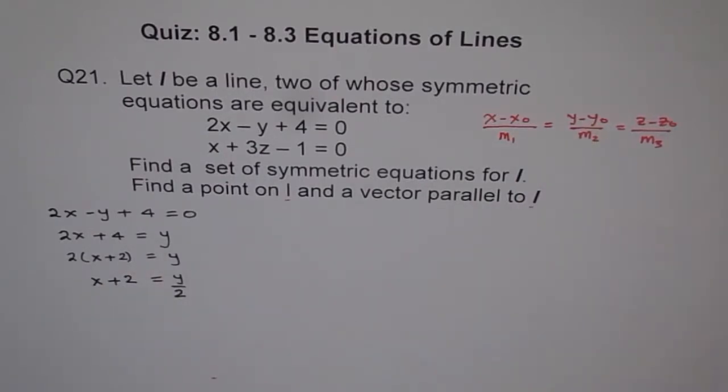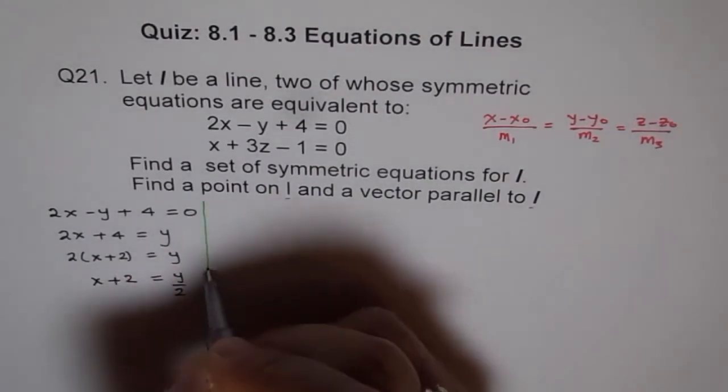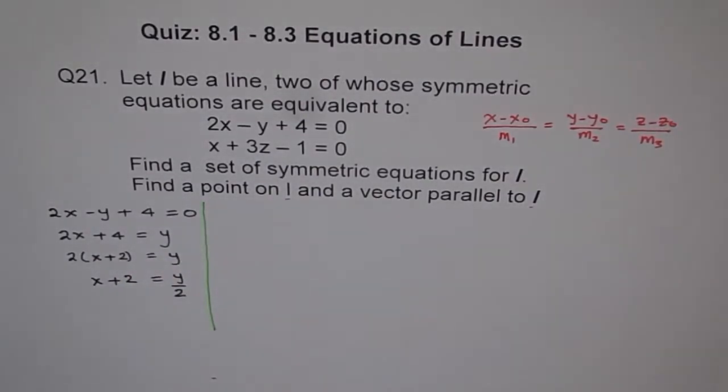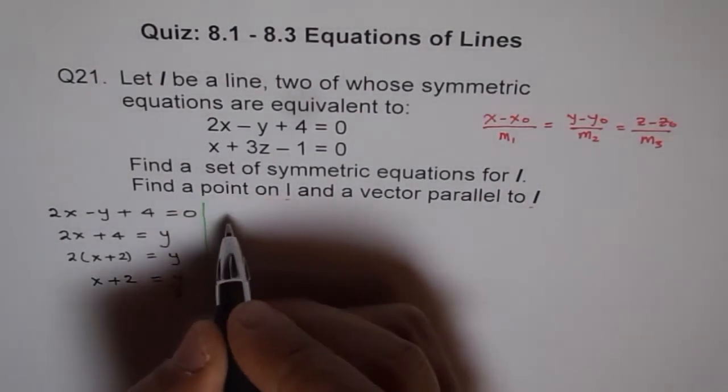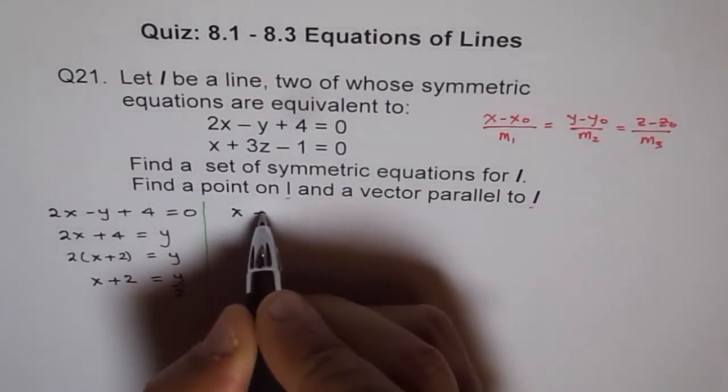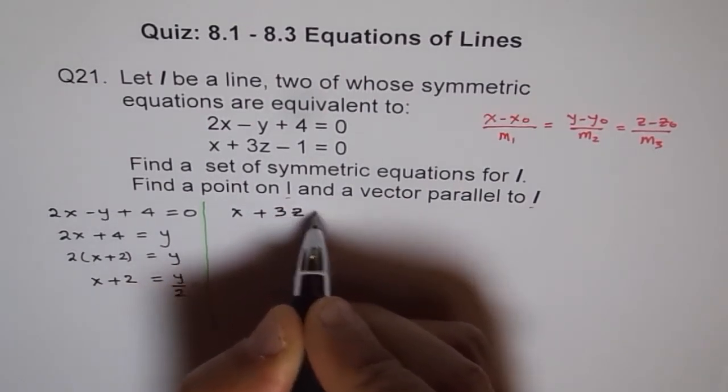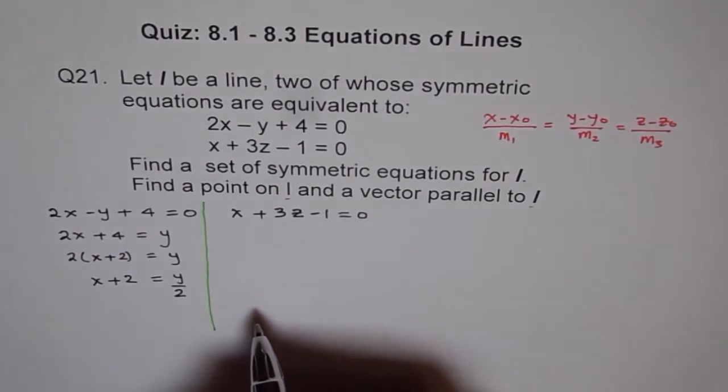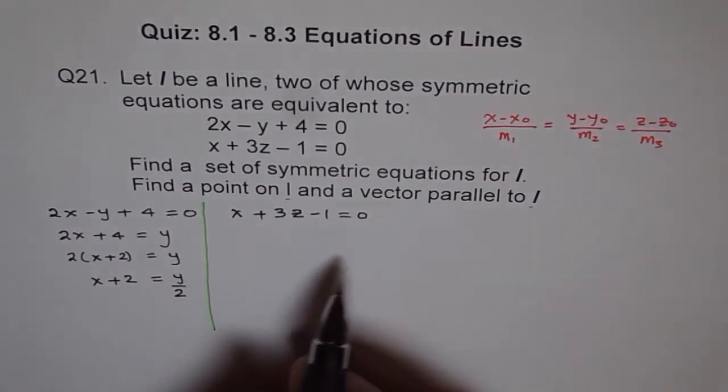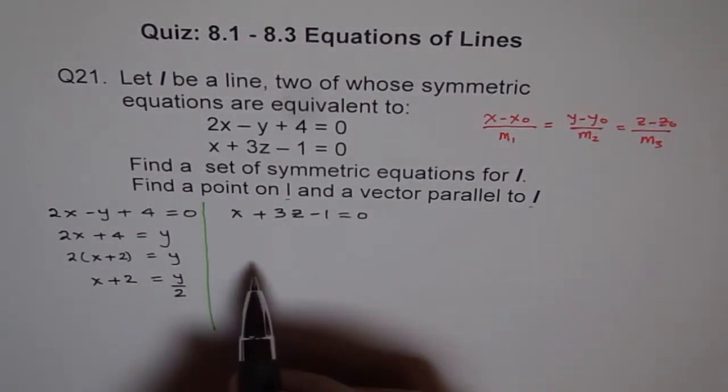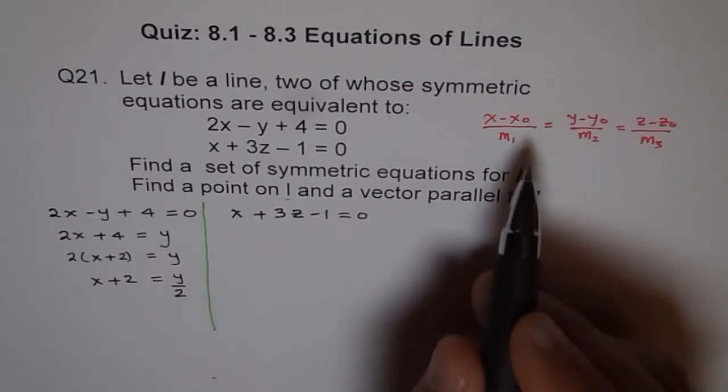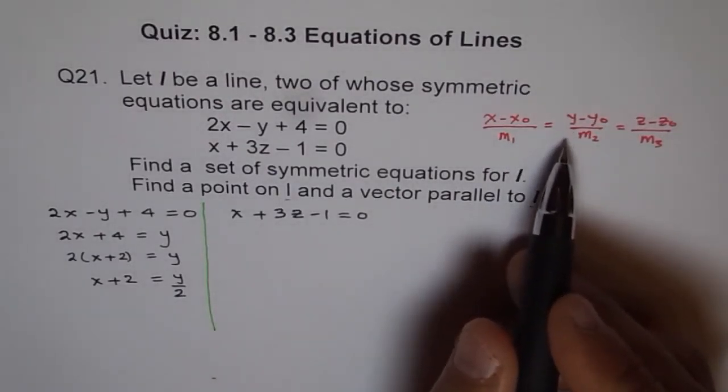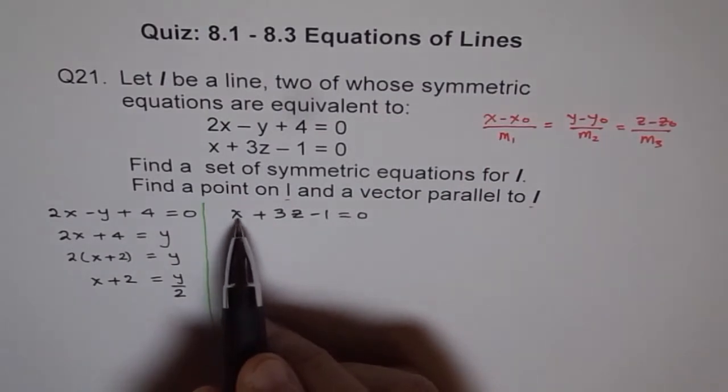x plus 2 equals y over 2 is kind of this. Think as if it is y minus 0. Does it make sense? And then we got a part of it. It seems to be familiar. So we will stop here for this equation and do the same thing for the second one.